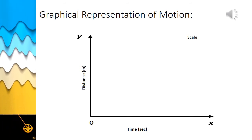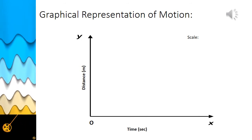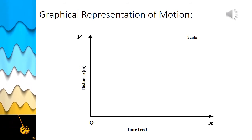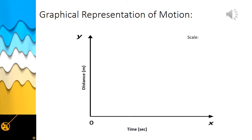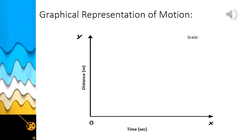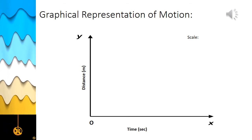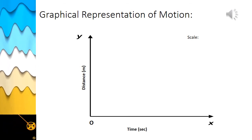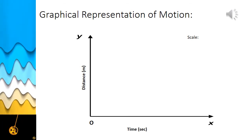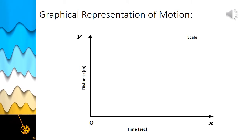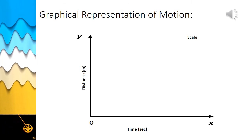The motion of objects showing the relationship between distance travelled and time taken can be represented in a diagram called a distance-time graph. A distance-time graph shows how the distance travelled by a moving object changes with time, and graphs are generally plotted on graph paper.